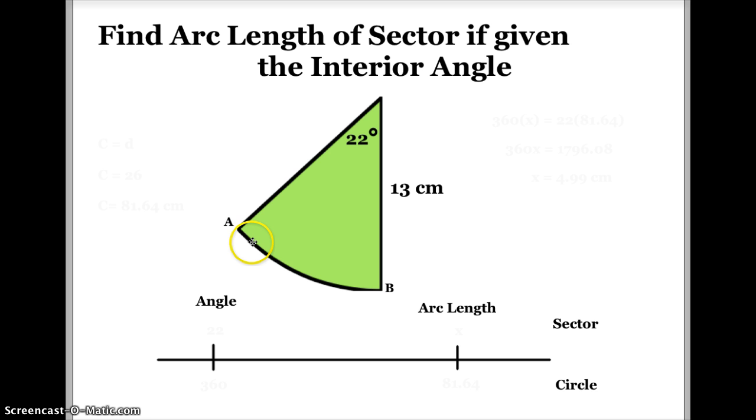Now let me show you what I mean by that. This arc length is part of the circumference of the circle. This is what I'm trying to find. Since I'm trying to find the arc length of that sector, I'm going to put the letter x there. I know that the interior angle is 22 degrees, so I'll put 22 there, the angle of the sector. And I know that there's 360 degrees in a circle. So I'm going to put 360 degrees down there.